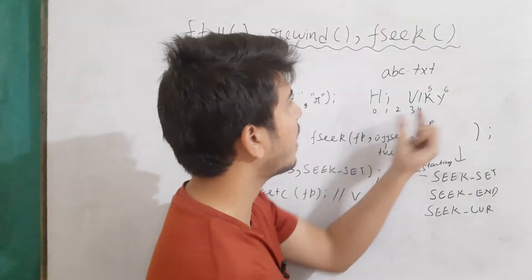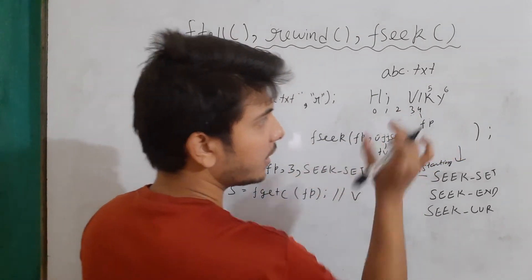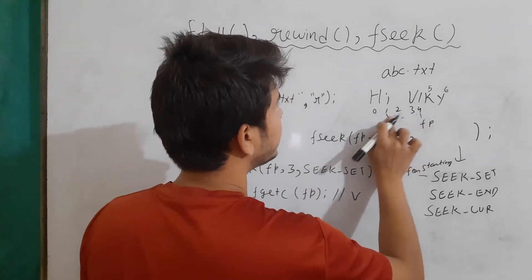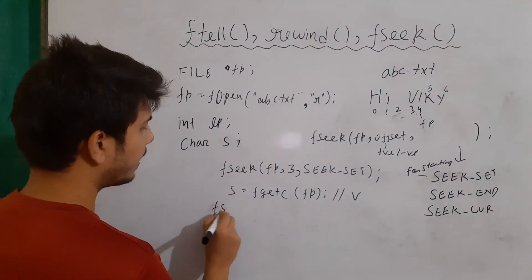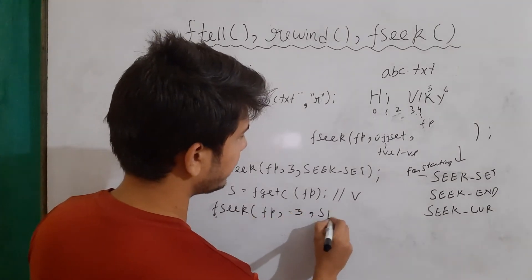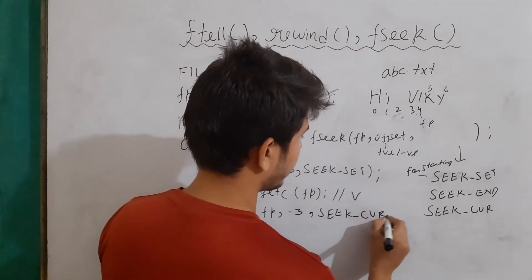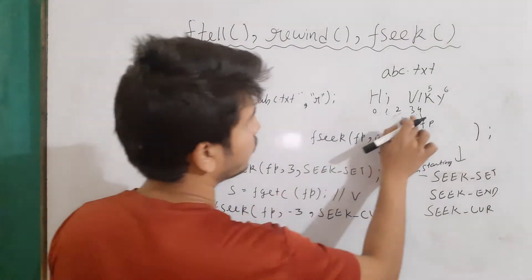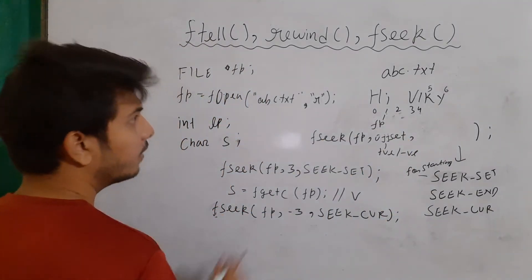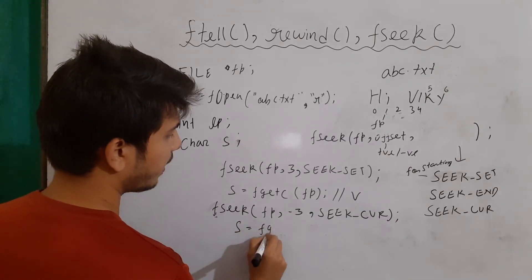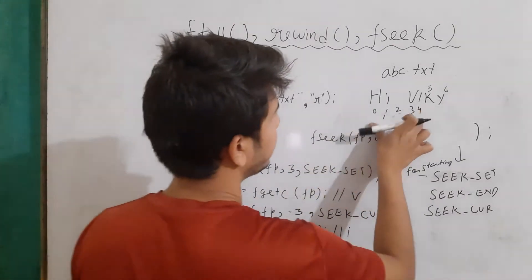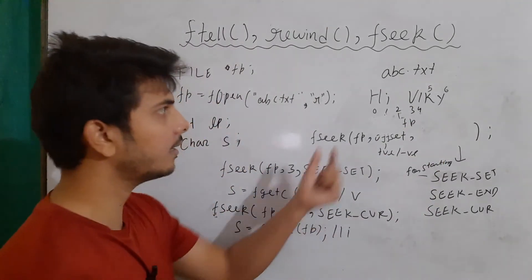Now let's say from the current location (index 4), I want to reach 'i' at index 1. I have to move backward three steps. So I write fseek(fp, -3, SEEK_CUR). This moves fp three steps backward — one, two, three — so fp now points to index 1. Then if I write s equals fgetc(fp), it is going to return the character 'i' and again increment fp's position.